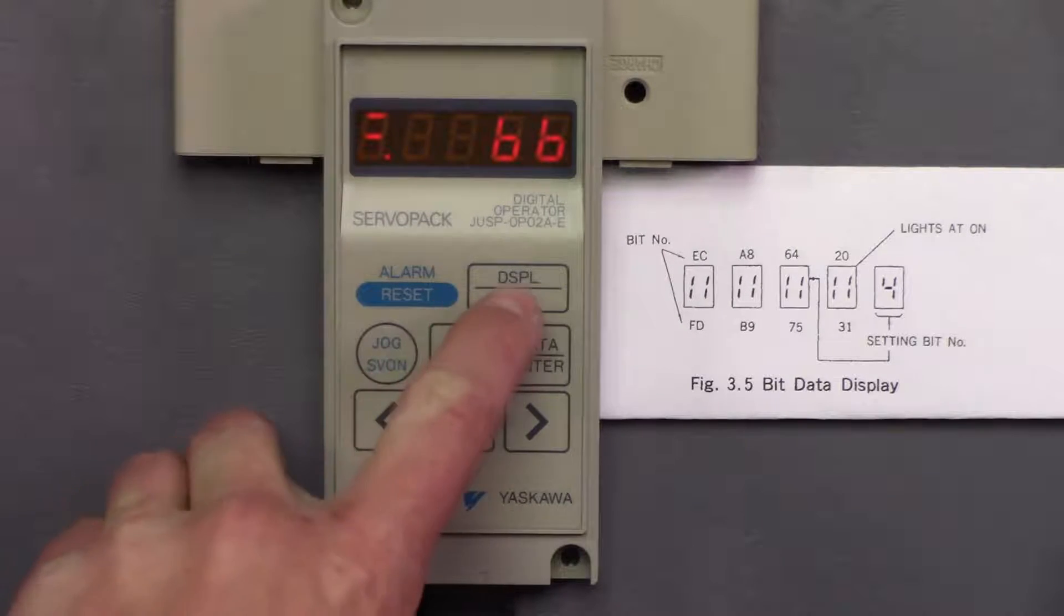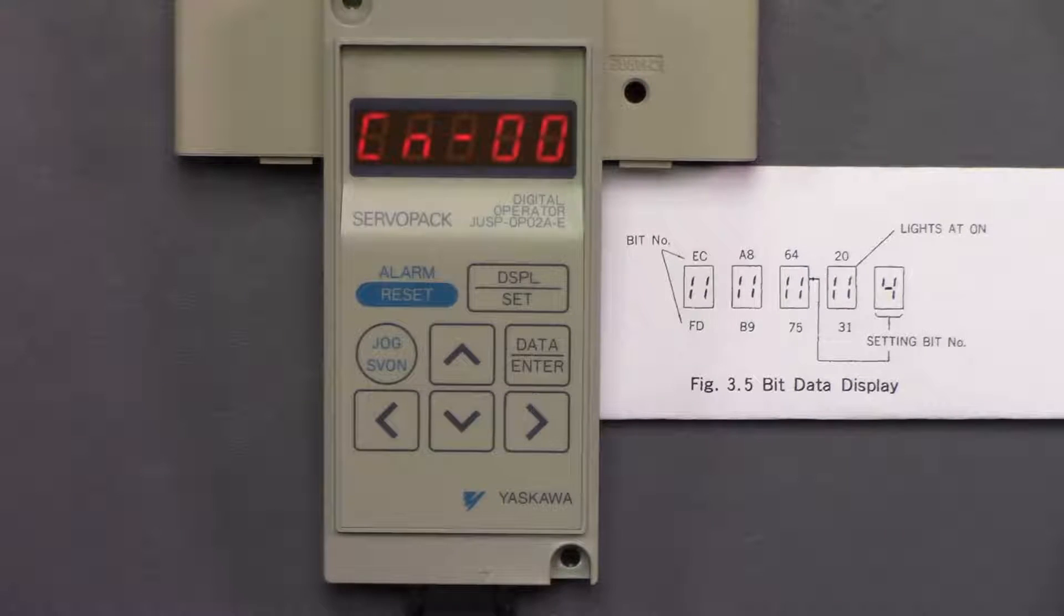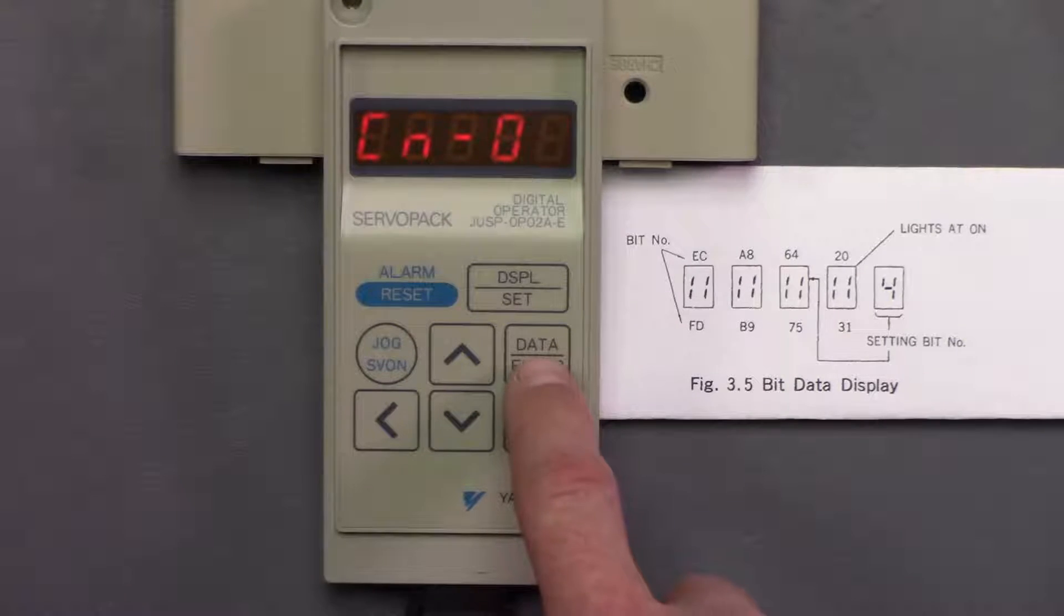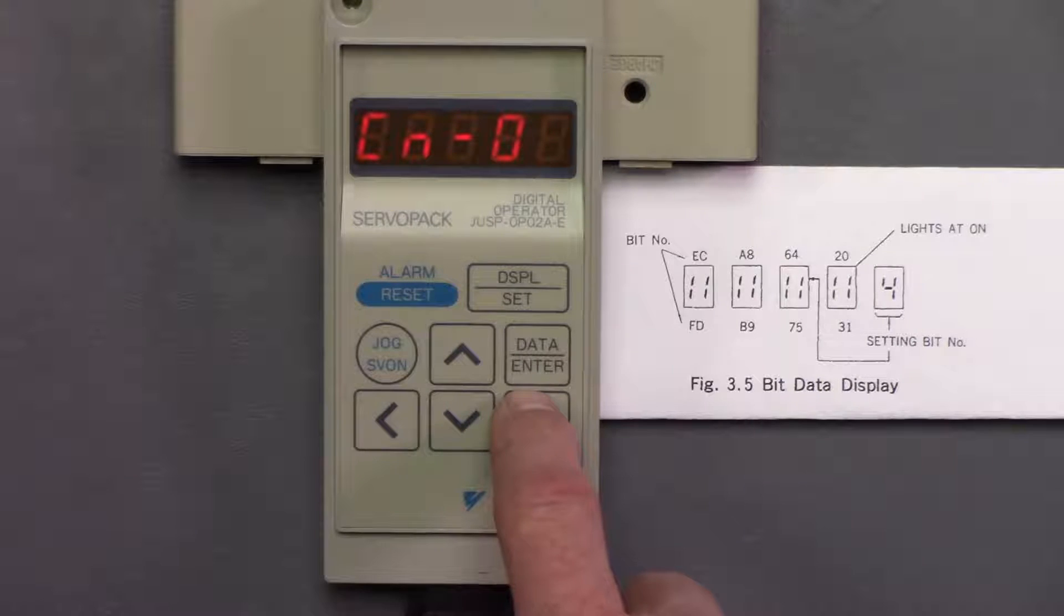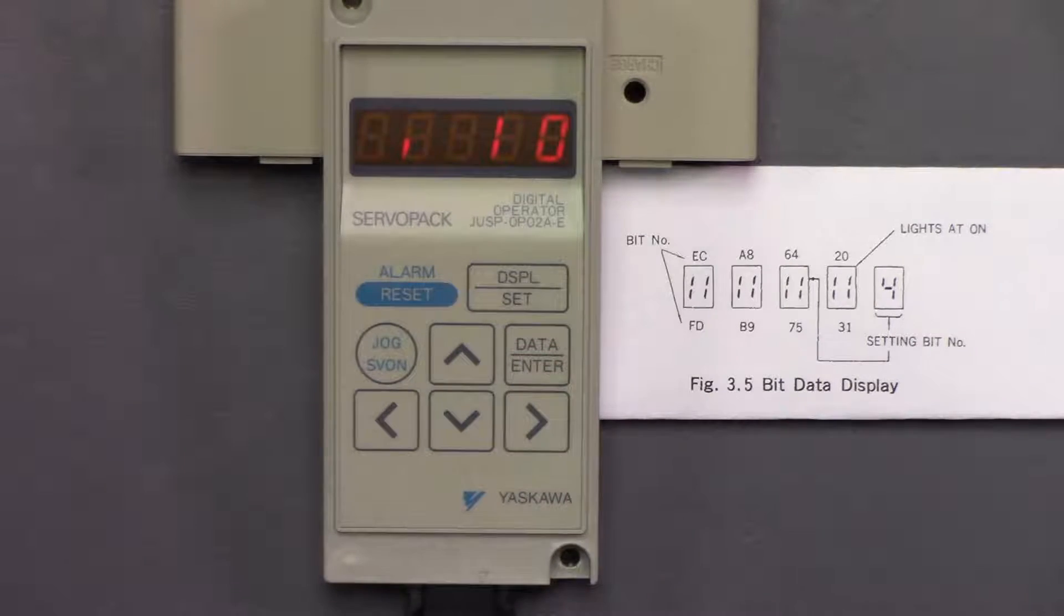From there, if we press the data set, it's going to get us into our CN parameters. There's our setting mode. We'll hit the arrow key up once and we're going to go into CN01. I'm going to hit enter. And here we're going to talk about the bit settings.